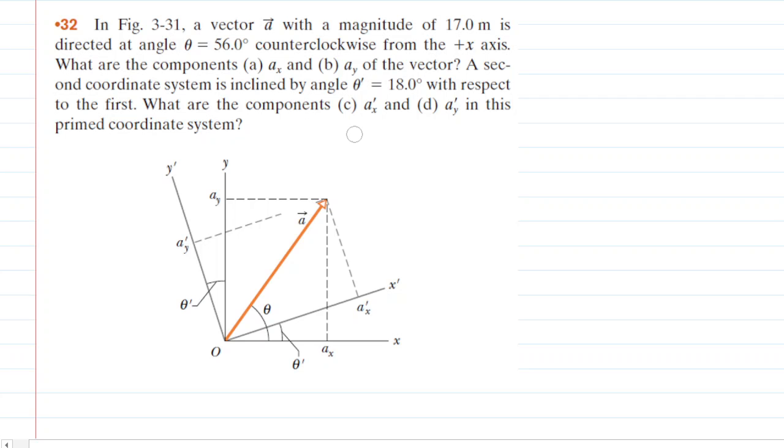For parts A and B, we're just using the standard X and Y axis, so for those parts we're going to eliminate the axes that are labeled X prime and Y prime, and now we can just draw the standard X and Y components.